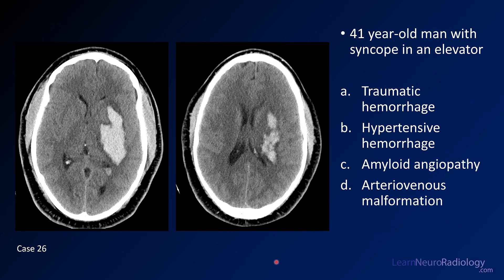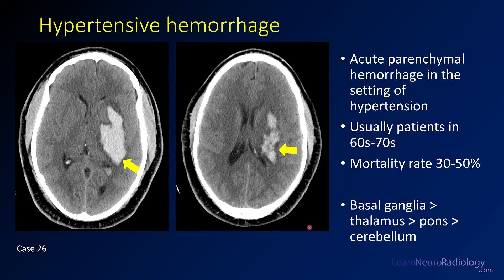Case number 26: a 41-year-old man with syncope in an elevator. Two CT images. Choices are traumatic hemorrhage, hypertensive hemorrhage, amyloid angiopathy, or arteriovenous malformation. This is a classic location for hypertensive hemorrhage — a lenticular form centered in the thalamus and basal ganglia. Even though this patient is slightly younger than typical, it's still most likely hypertensive. Common locations include basal ganglia, thalamus, pons, and cerebellar hemispheres. Amyloid angiopathy would cause more peripheral lobar hemorrhages. There's no evidence of an AV malformation nidus or abnormal flow voids here.